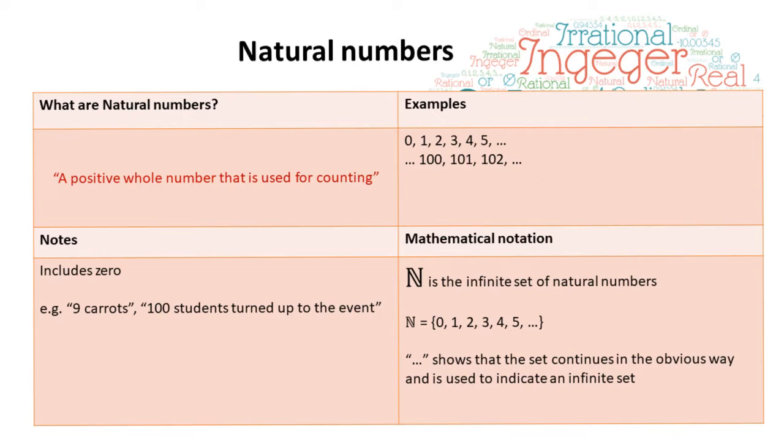So first of all, what do we mean by a natural number? Well, a natural number is any positive whole number that is used for counting. So we can see some examples up here. It's important to note that natural numbers also include zero. So we use natural numbers when we say, for example, I've got 9 carrots or 100 students turned up to the event.